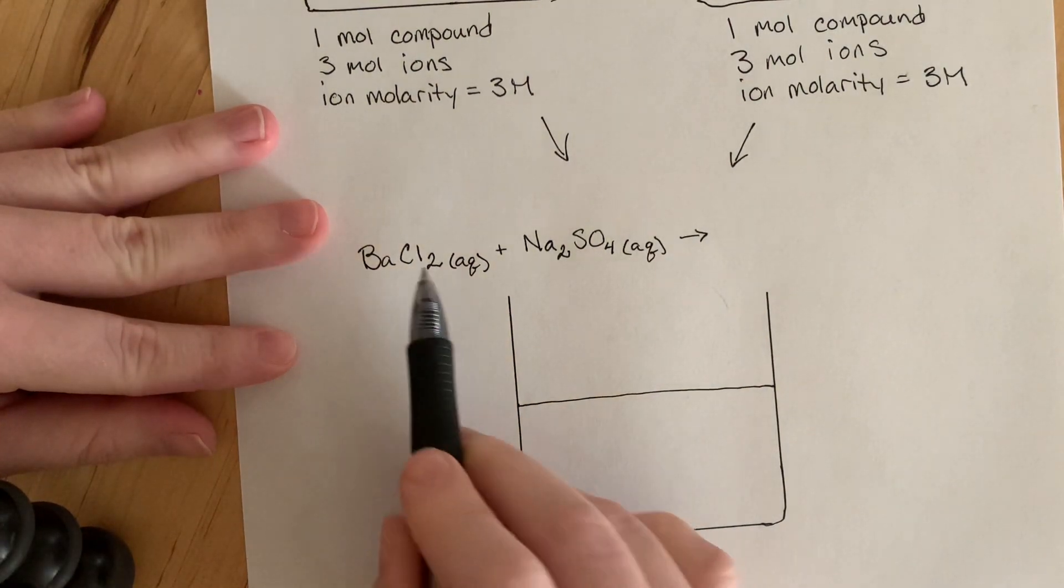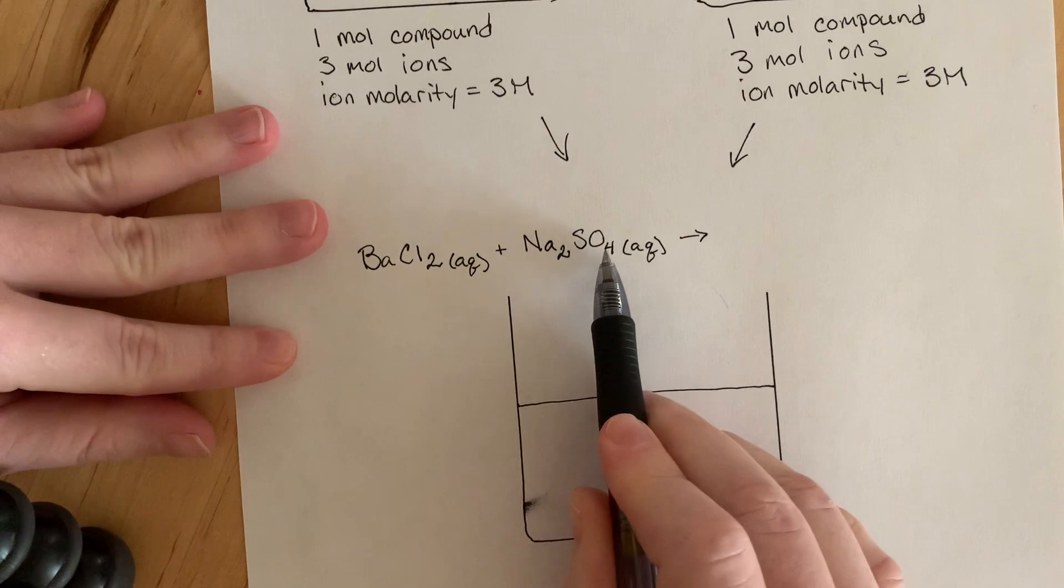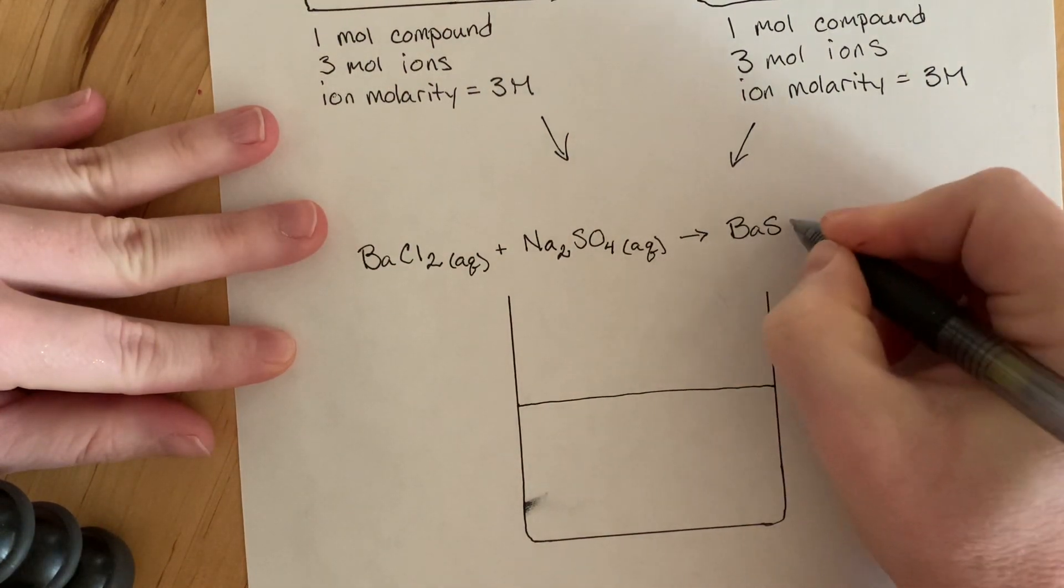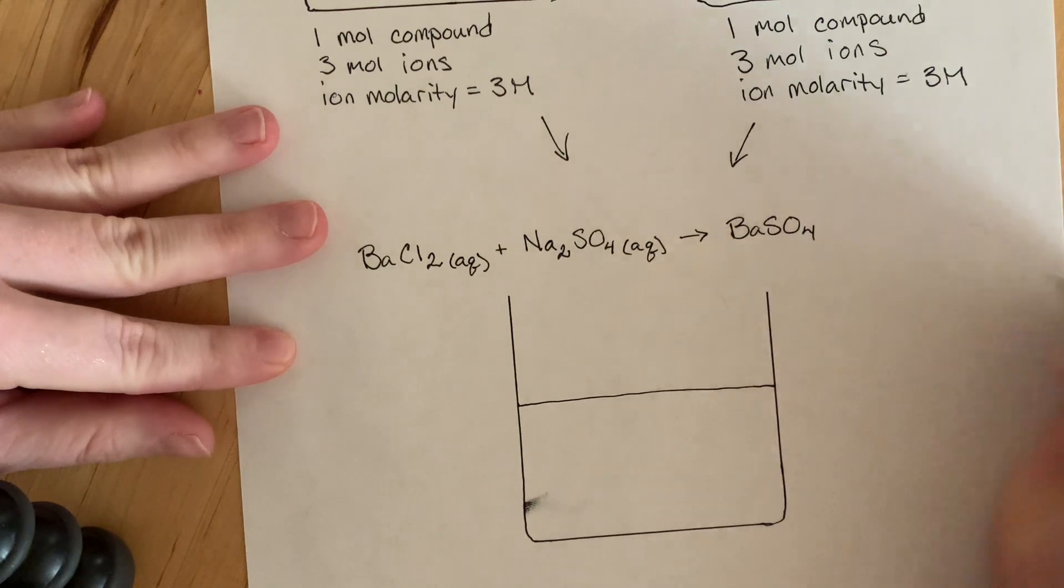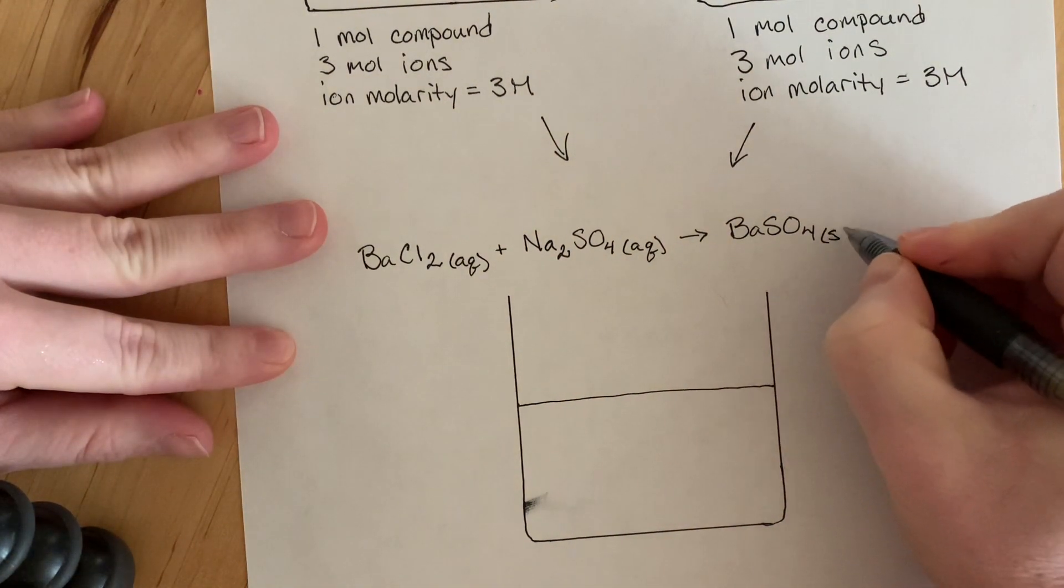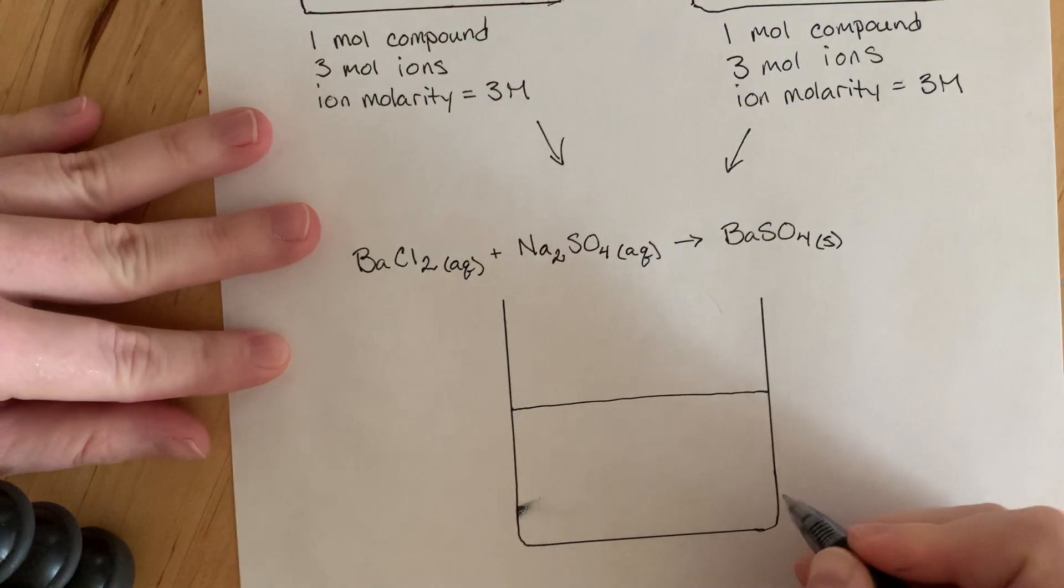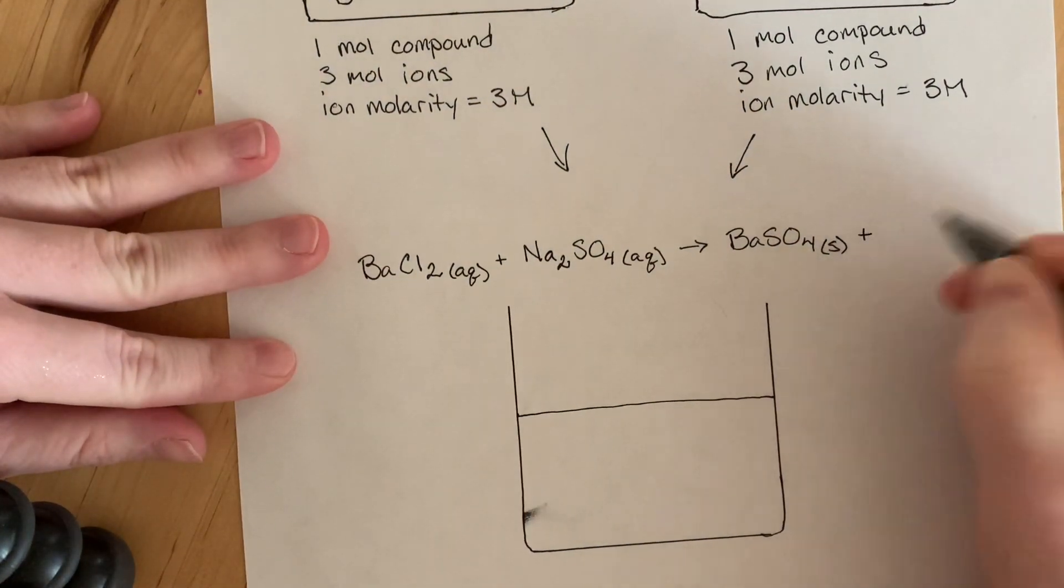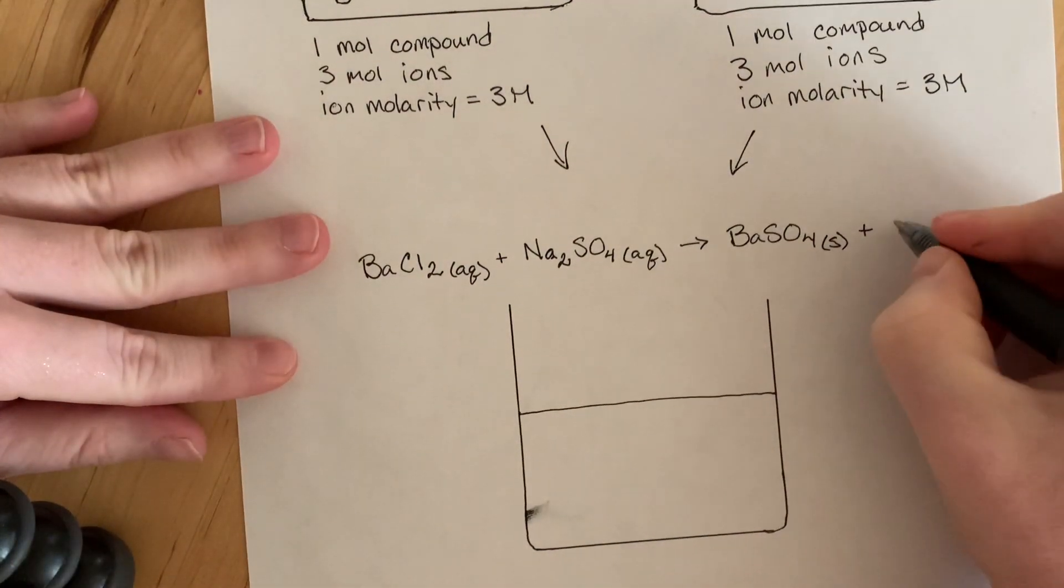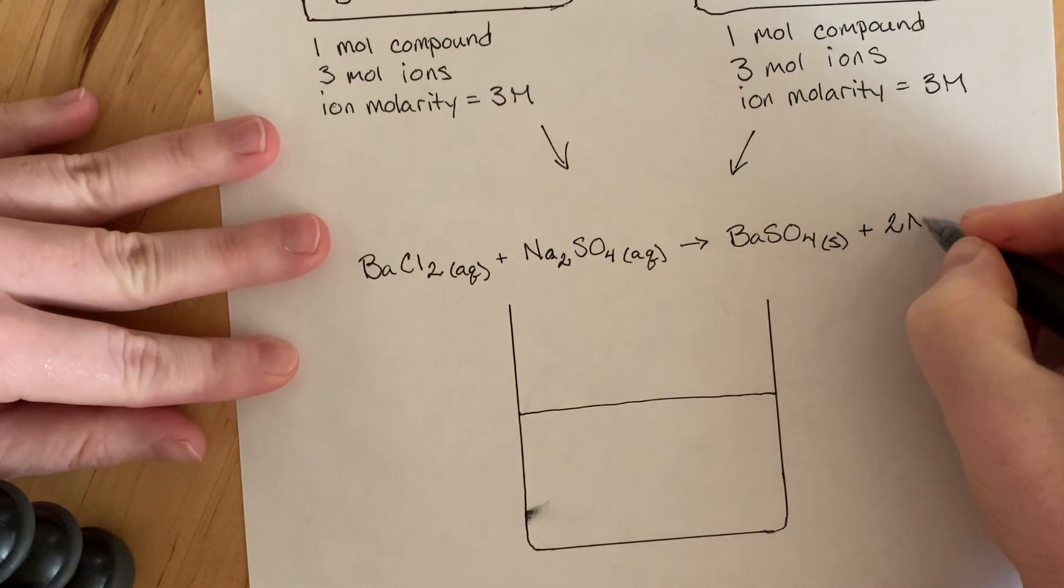We have barium chloride aqueous plus sodium sulfate aqueous. So this is going to form, so barium and sulfate are going to come together. And if we look at our solubility rules, we'll find that this one becomes a solid. And then we have the sodium and the chloride left over, but that is aqueous. So we have two sodium chlorides.